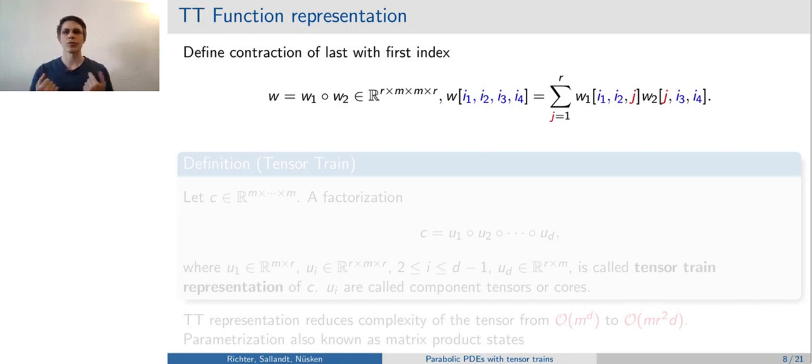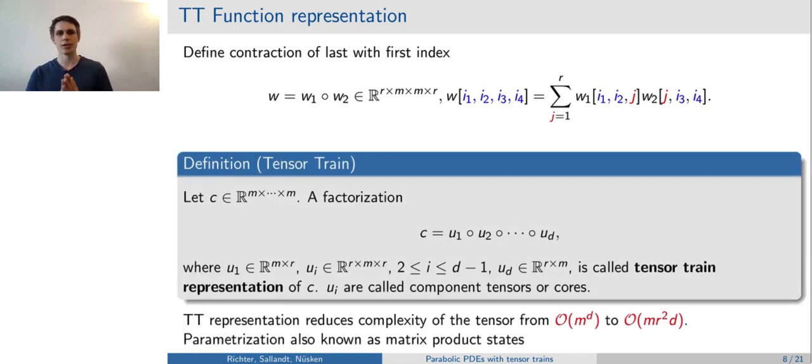We introduce a contraction between the first and the last index of two tensors. As you can see in the sum, two order three tensors, w1 and w2, are contracted, and an order four tensor remains. We can represent any order d-tensor by d minus one of these contractions and d-tensors u1 to ud. Note that u1 and ud are order two tensors, which means that they are matrices, and the others are order three. The important number in this representation is the rank r, which appears in the component tensors. Assuming moderate r, the exponential number of coefficients gets reduced to m times r squared times d, which means linear increase with respect to d. This parametrization is also known in the physics community as matrix product states.